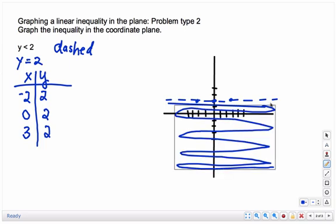So that means your solution represents this part of the graph. Anything below this line, but not including the line. That's what the dash means. The dash means the line is a boundary, but it's not part of the solution.